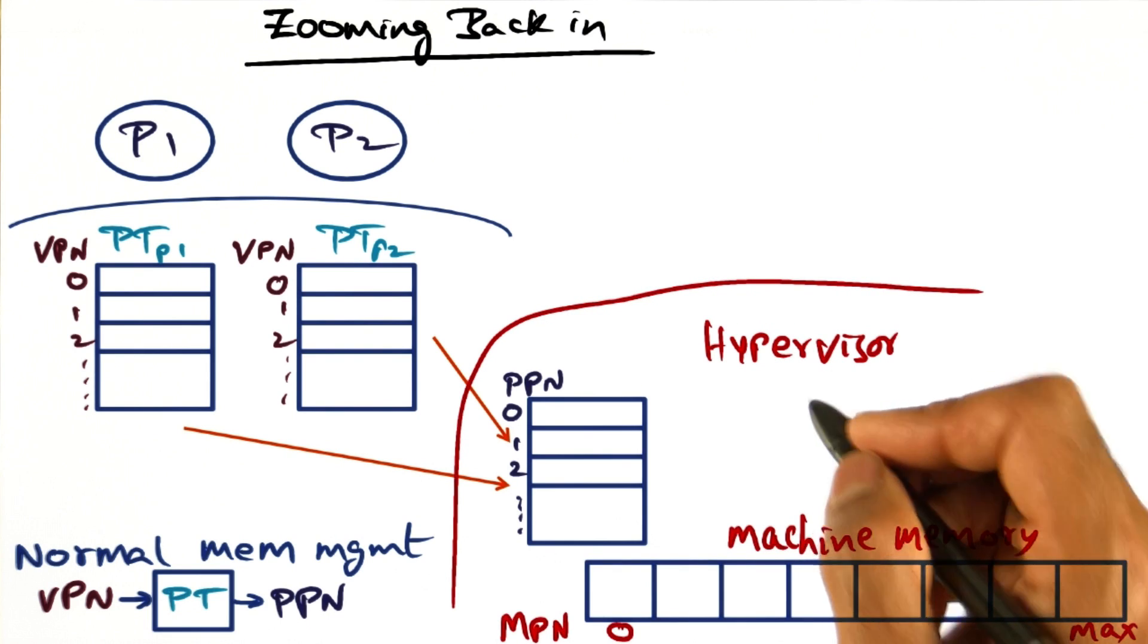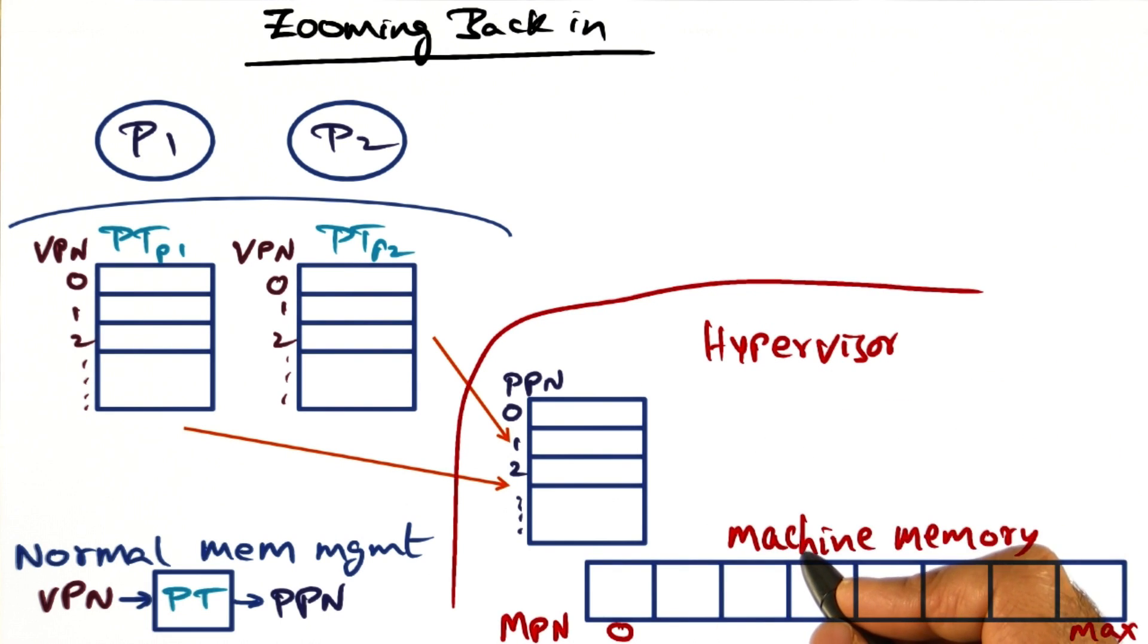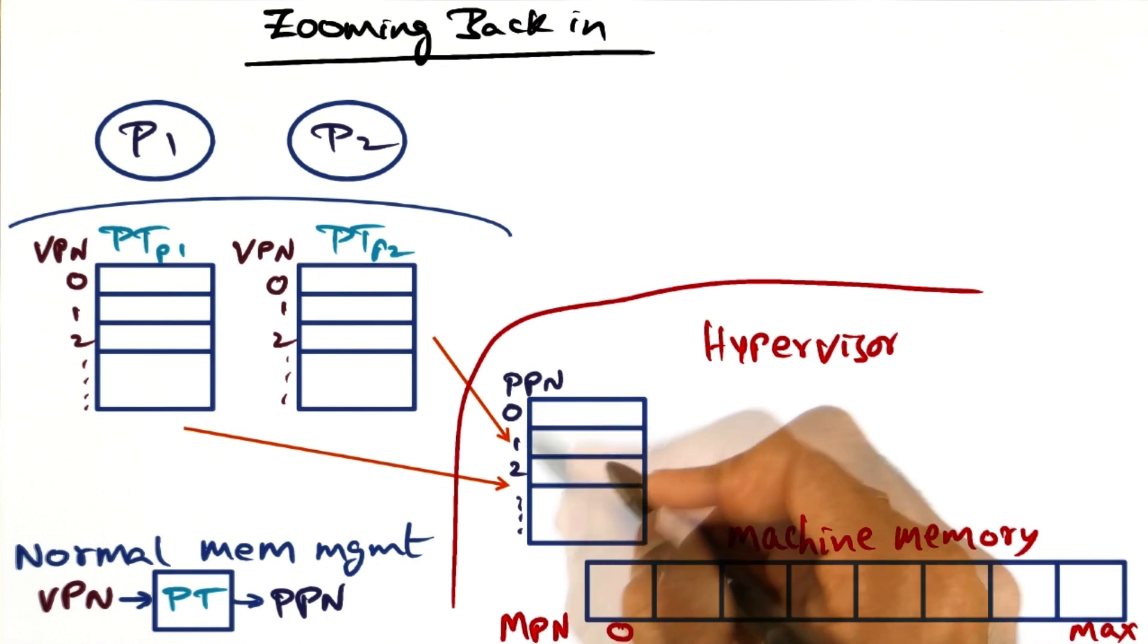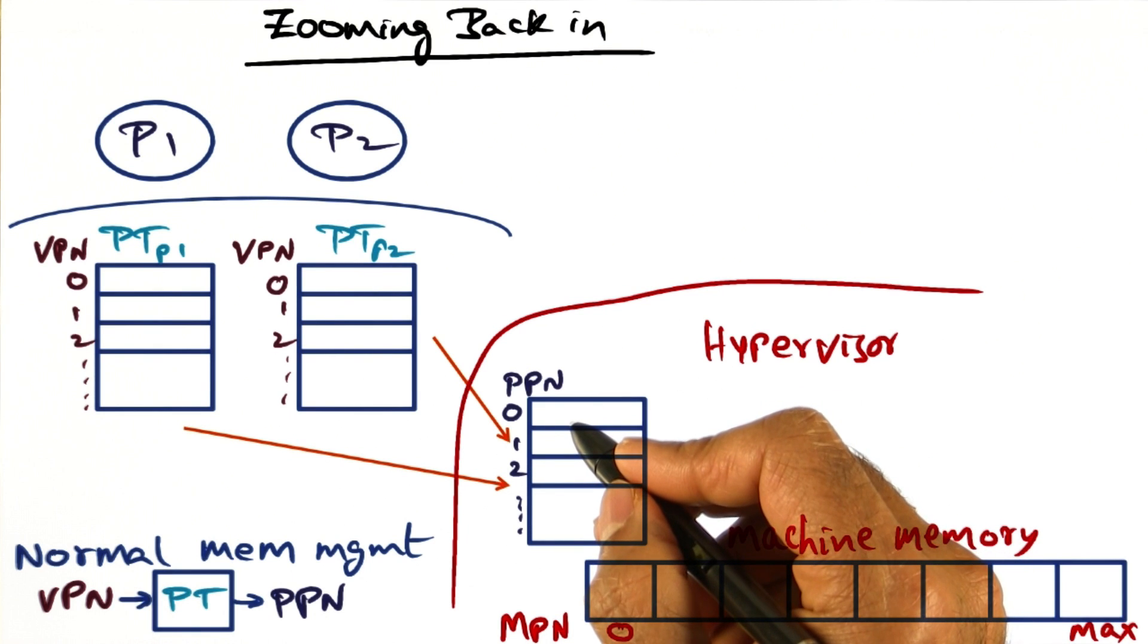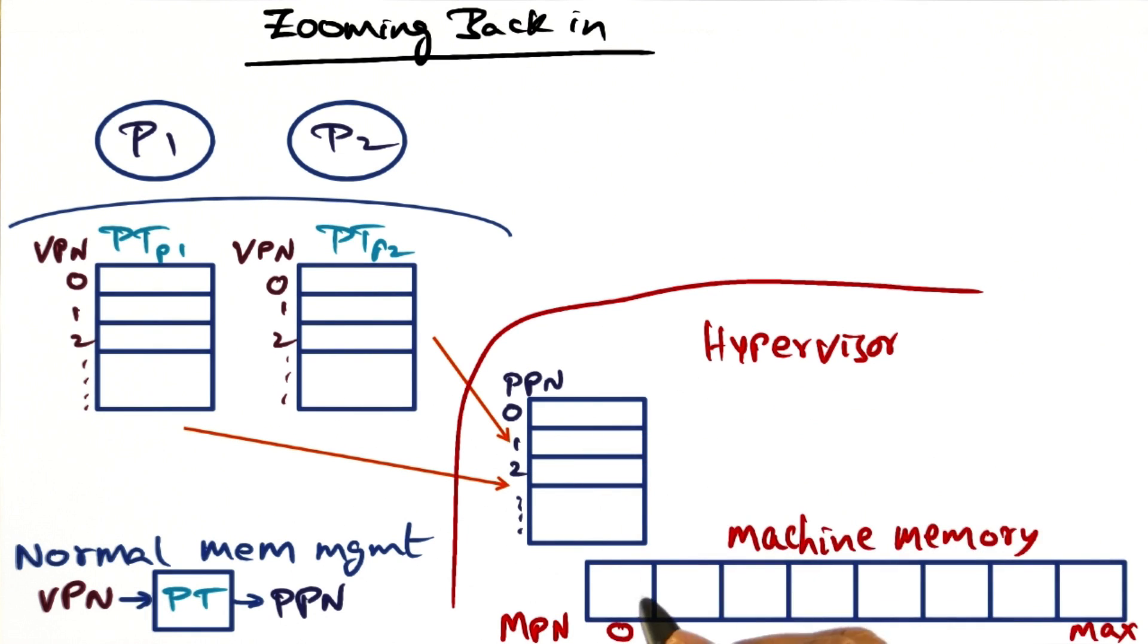In a virtualized setting, we have another level of indirection. This physical page number of the operating system has to be mapped to the machine memory or the machine page numbers. We'll call the pages in the machine memory, which is the real thing, as MPN, short for machine page numbers. And this goes from zero through some max, which is the total memory capacity that you have in your hardware.